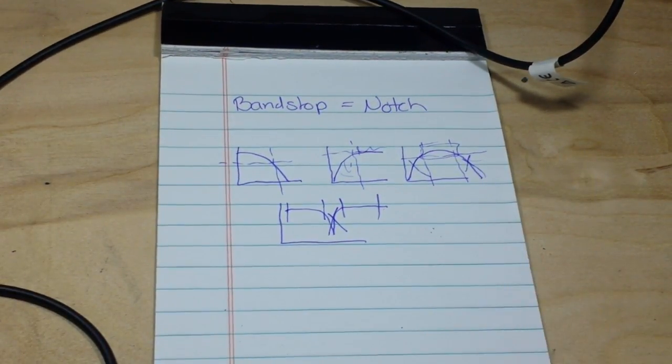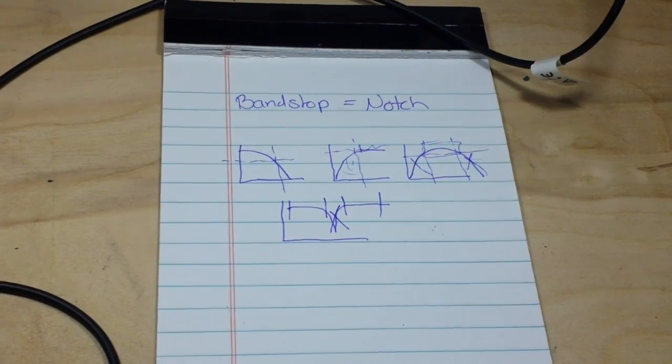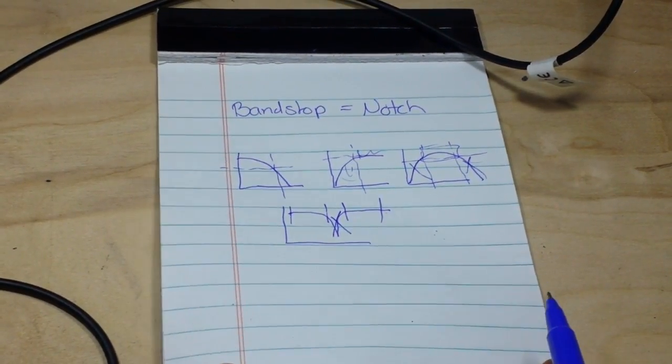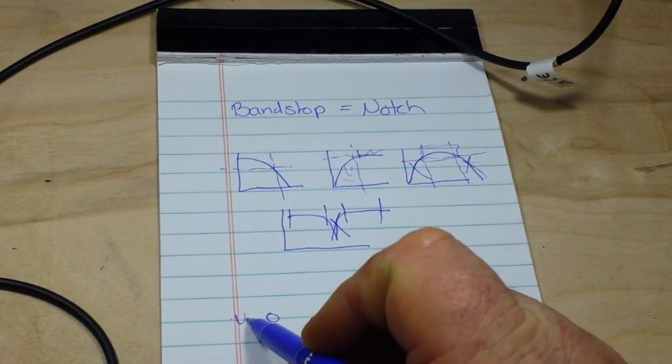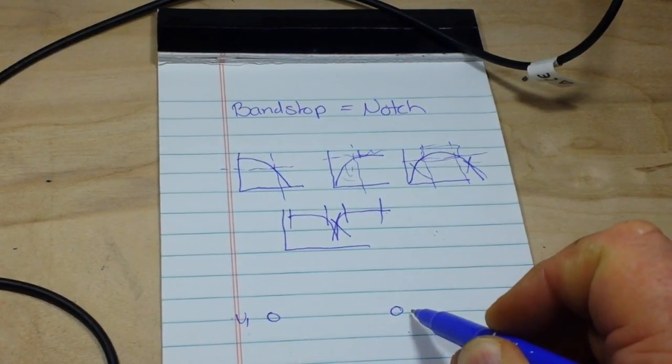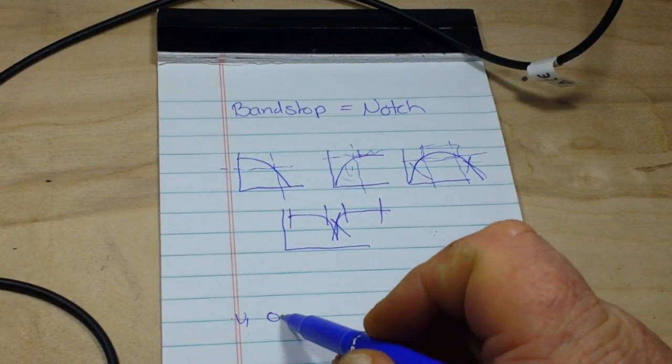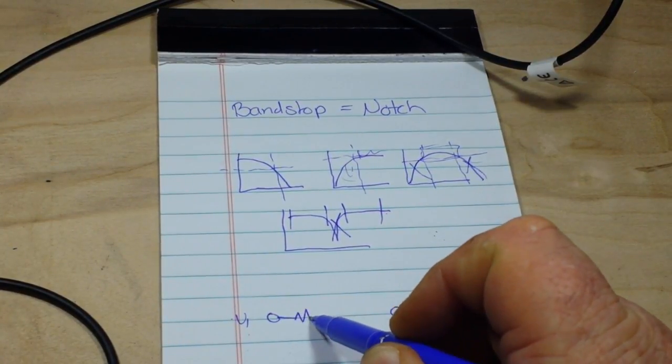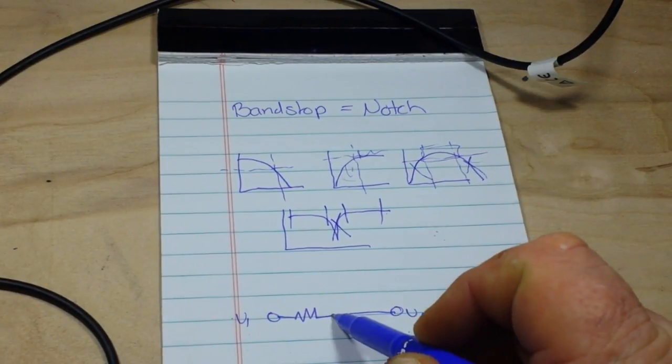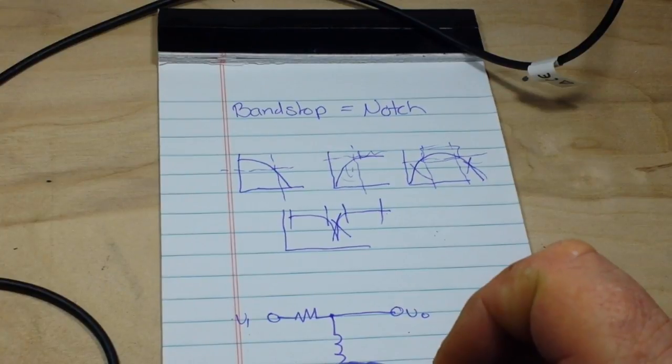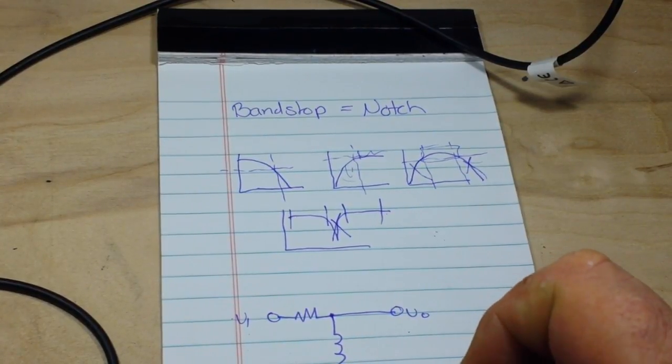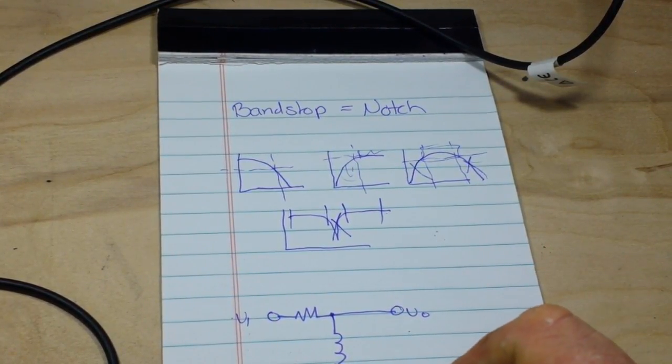And this is an incredibly simple filter. All we're going to use is an inductor, a capacitor, and a resistor. And it's going to look a little something like this. This is our V-in, this is our V-out, and we'll start with the resistor. And then we're going to come off to our inductor, directly down to a capacitor to ground.